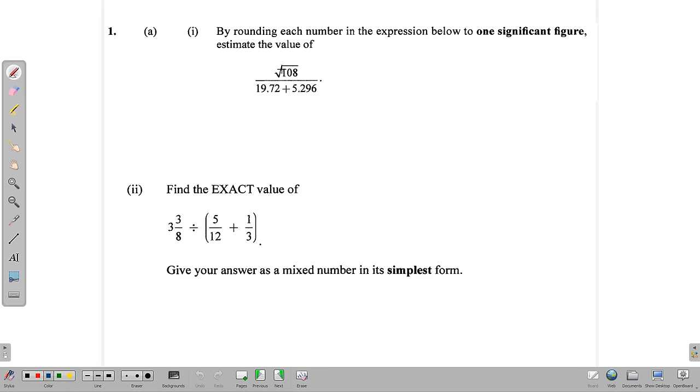So in this expression, the root of 108 divided by 19.72 plus 5.296, we follow the rules of rounding off when we are doing significant figures just the same. One significant figure is this one right here. The next digit is less than 5. So we're simply going to round that off to 100. And in our denominator, 19.72, one significant figure is this one. The 9 is 5 or more. So we add one to this. So that is going to give us 20.